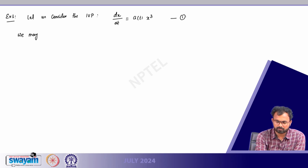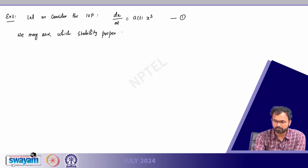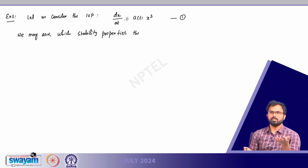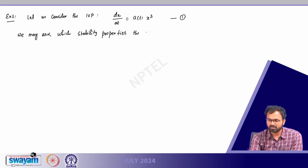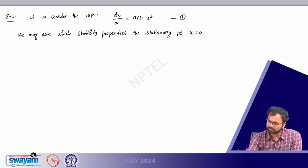We may ask: which stability properties does the stationary point have? The stationary point is where dx/dt = 0, which gives us the stationary points. Here the stationary point is x = 0, and we want to determine what kind of stability property it has.